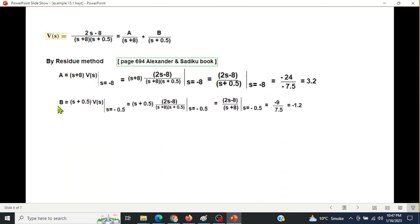Same way for B: multiply the denominator of B with V(S), and simplifying gives B = -1.2. So V(S) is 3.2/(first denominator) - 1.2/(second denominator). Now we're ready to take inverse Laplace transform.